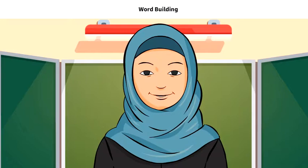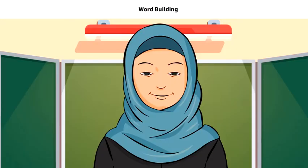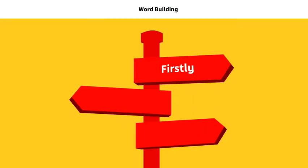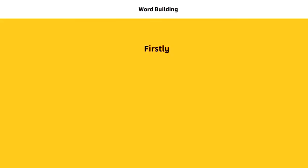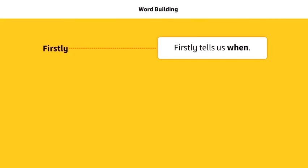Let us now learn about signpost words, which show the reader or listener the direction in which they are going. Let us see some examples: 'firstly', 'although', 'furthermore'. Different signpost words give different information to the reader or listener. 'Firstly' tells us when.